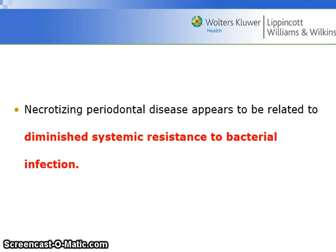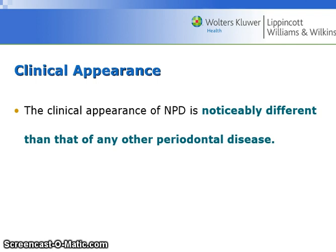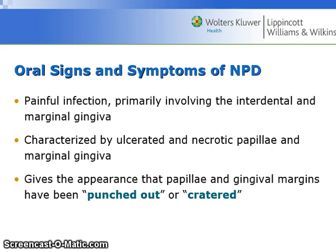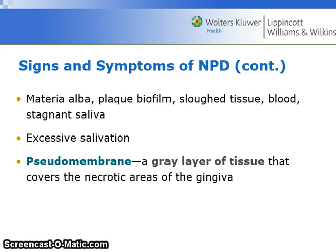Necrotizing periodontal disease appears to be related to diminished systemic resistance to bacterial infection. The clinical appearance is noticeably different than that of any other periodontal disease. The oral signs are painful infection primarily involving the interdental and marginal gingiva, characterized by ulcerated and necrotic papilla and marginal gingiva — giving the appearance that the papilla and gingival margins have been punched out or cratered. There is materia alba, plaque biofilm, sloughed tissue, blood, and stagnant saliva present. A pseudomembrane — a gray layer of tissue — covers the necrotic areas of the gingiva. One of the most obvious signs is the fetid breath, or horrible bad breath, that you will never forget once you experience it.